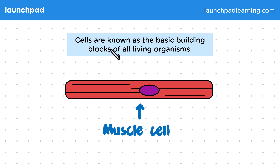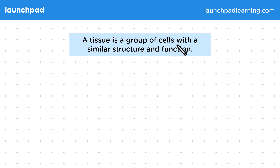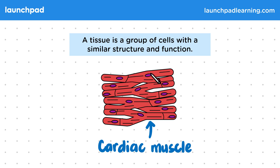So if cells are the most basic building blocks, what's the next level of organization? A tissue is a group of cells with a similar structure and function. In this simple diagram you can see cardiac muscle, which is made up of many individual cardiac muscle cells.